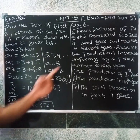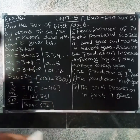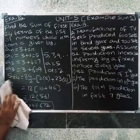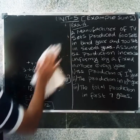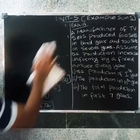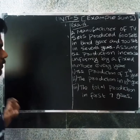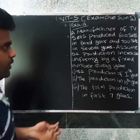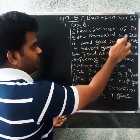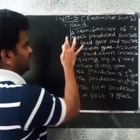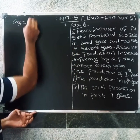So S24 equal to 670. Next problem: a manufacturer of TV sets produced 600 sets in the third year, so third year production equals 600.